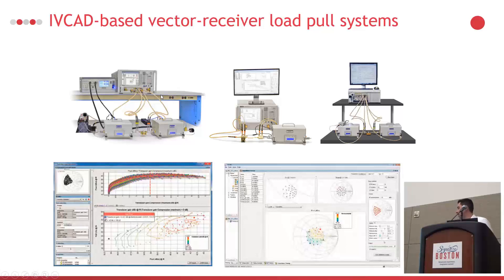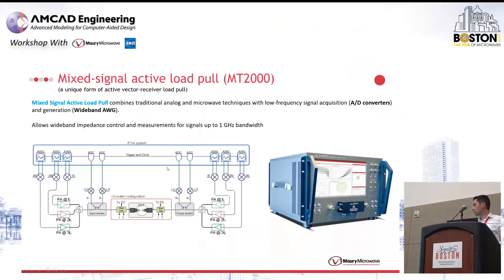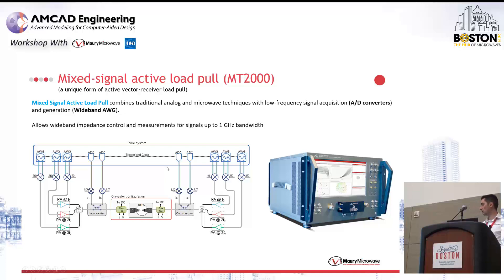Here are some examples of vector receiver load pull with several different topologies. We have the IVCAT software to drive all these different platforms and different vector network analyzers. Depending on your application, you can cover from very low frequencies all the way up to 67 GHz nowadays. The drawback about modulation can be solved with something called the mixed signal active load pull system, which is an example of vector receiver load pull. In this setup, we develop our own broadband VNA and large signal vector signal generators, so that we can do load pull for widely modulated signals up to a bandwidth of one gigahertz. The basic measurement capabilities remain the same — it's still doing A and B wave measurements with vector receiver load pull.